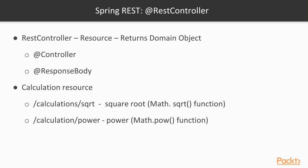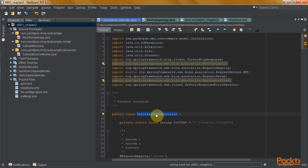REST controller is used to define the resources. It's a class-level annotation and it returns a domain object. In our sample REST web service, we'll create the calculation API with two endpoints: one for square root and one for power. Our main focus is on learning the concept of how we can implement the REST service. In the code, we have a calculation controller class, and I'll simply add the REST controller annotation so it will have all the features required for implementing a REST resource.